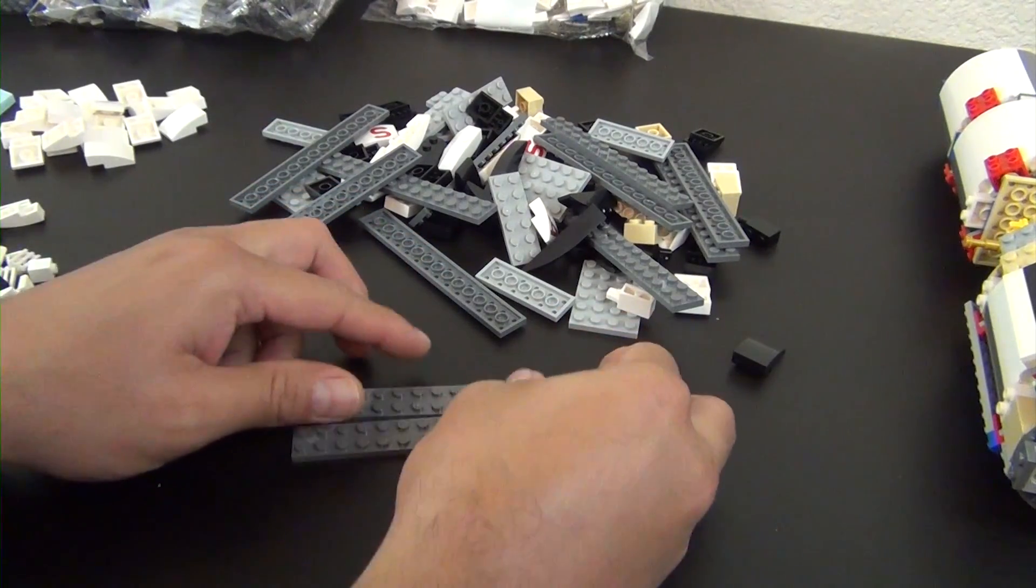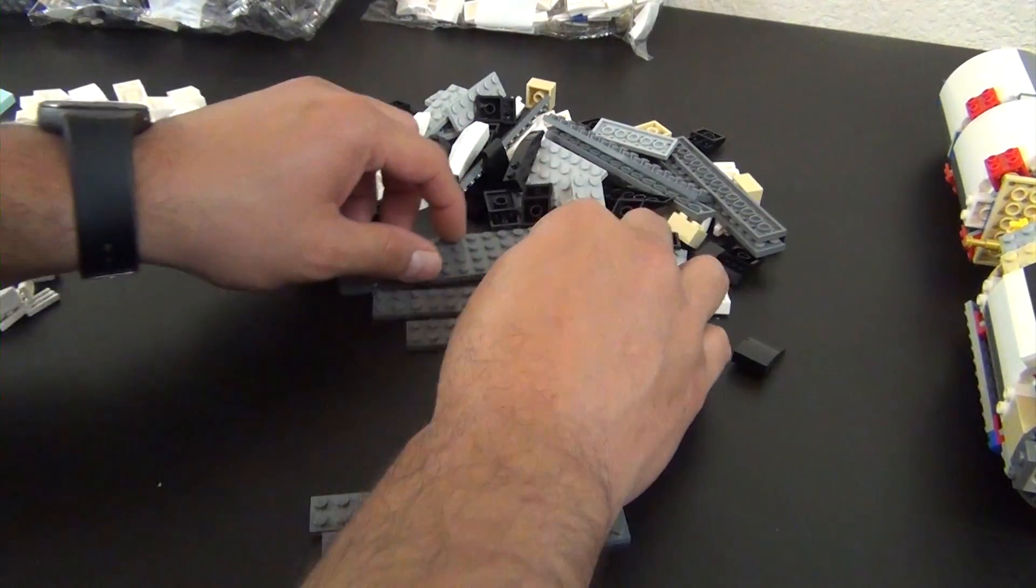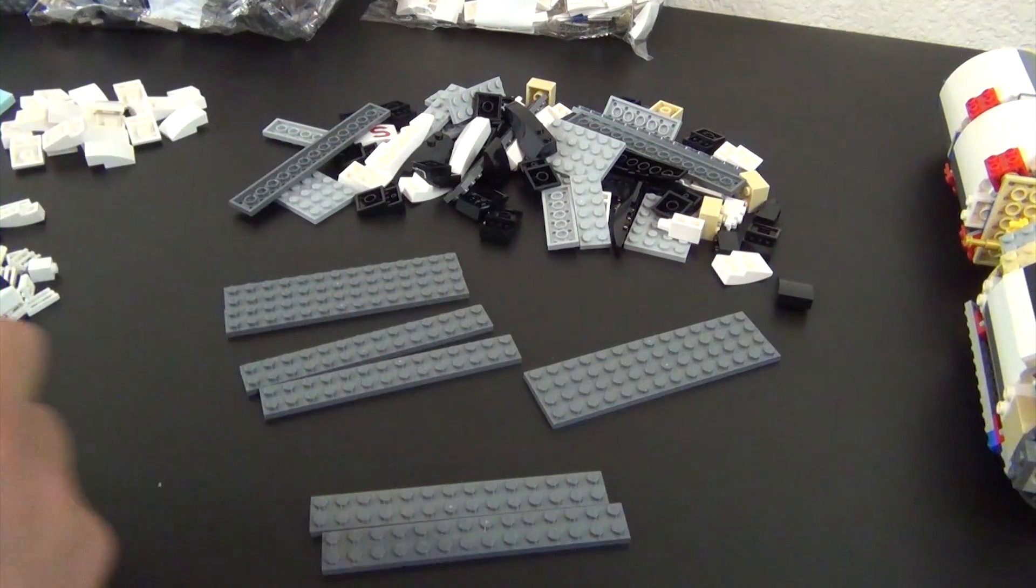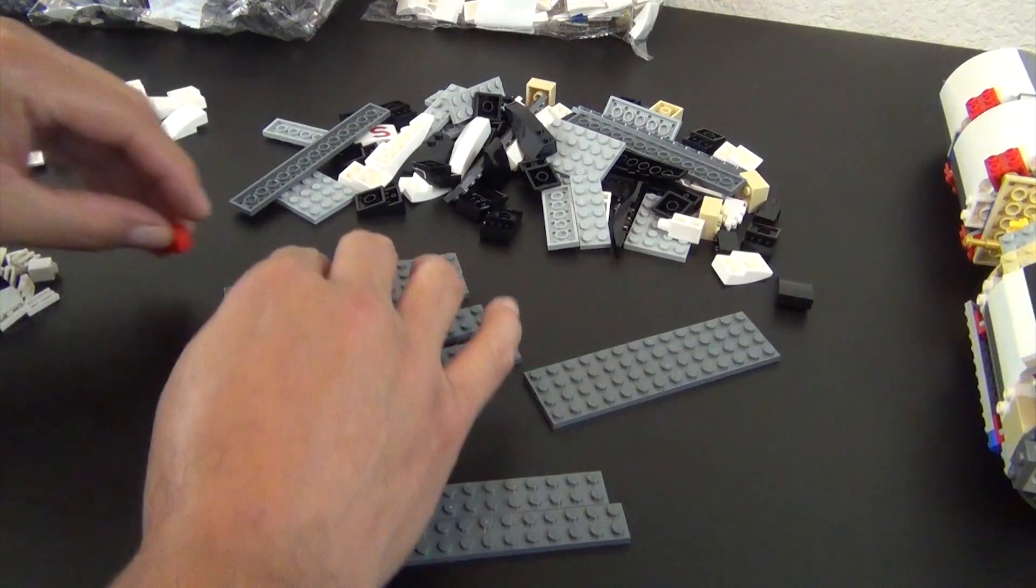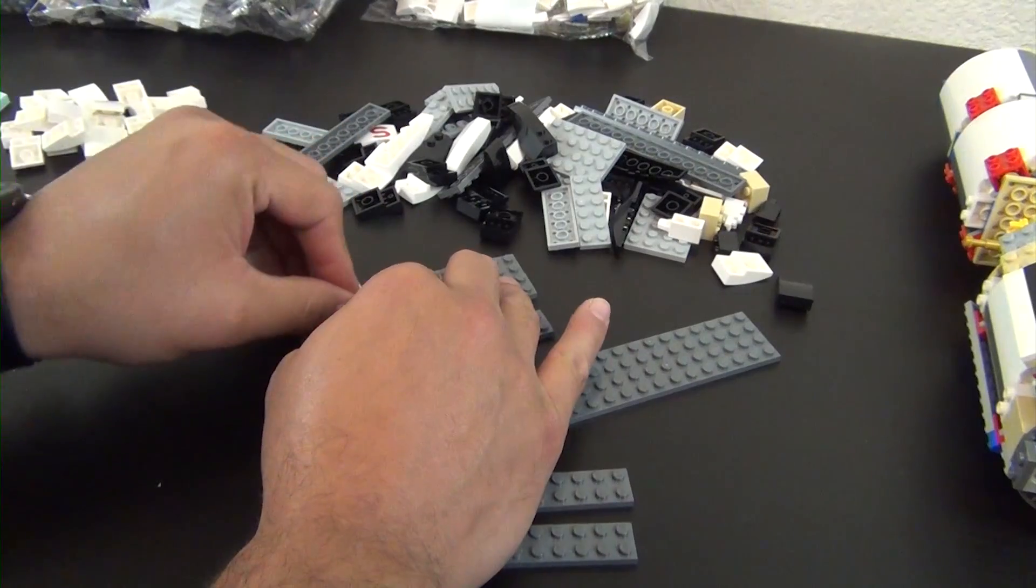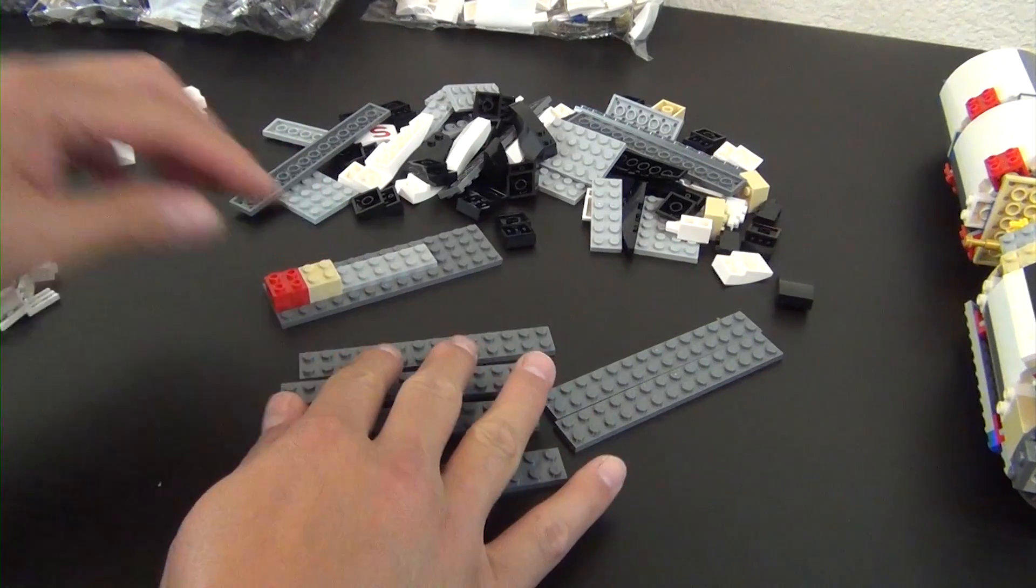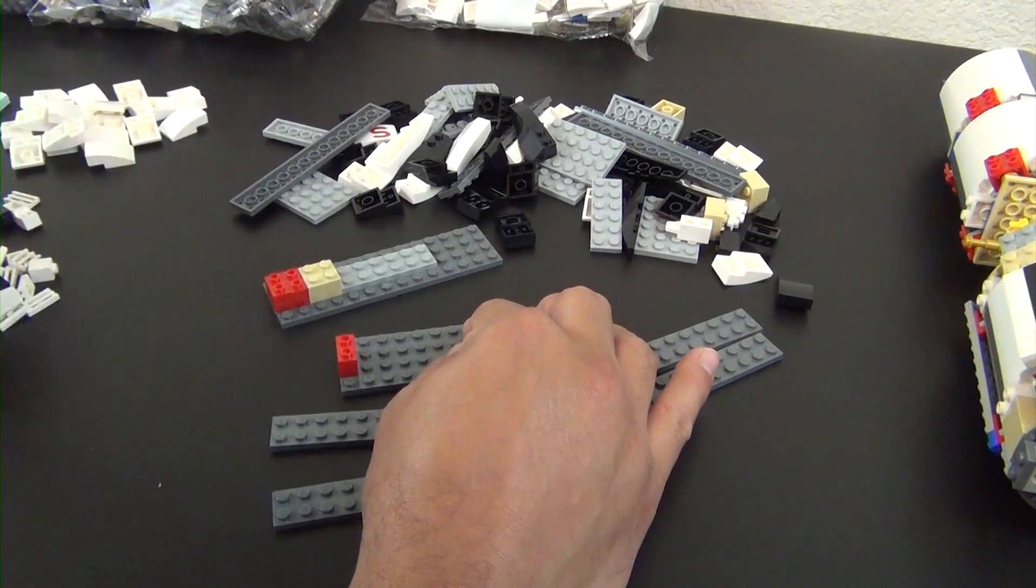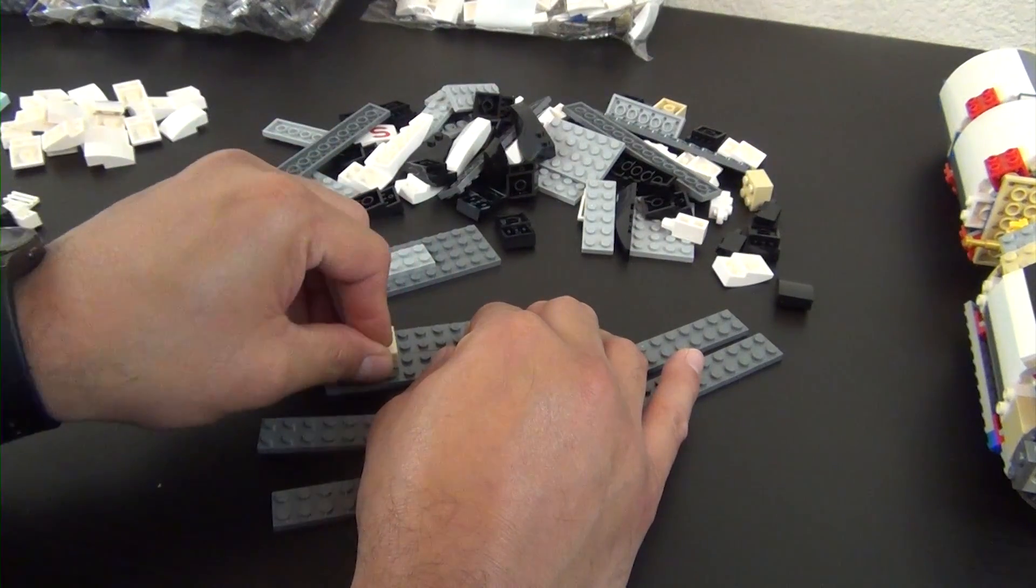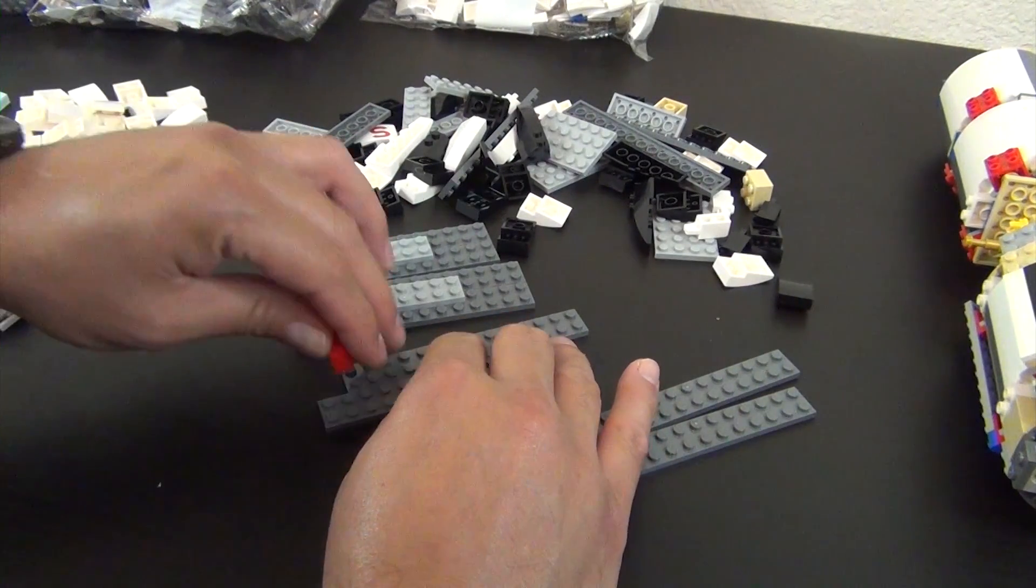All right, so next up we have a four times build. They'll show four of the same thing being built. Starts with these plates. Turn the page, attach some bricks to them. Another plate here. So it's basically, if anyone watches a lot of my videos, you've seen me do a lot of these type of builds. I'm kind of building them all at the same time. It's just easier than going back and rebuilding something.